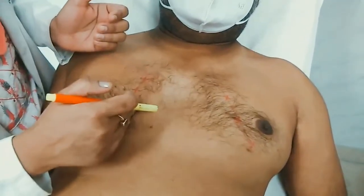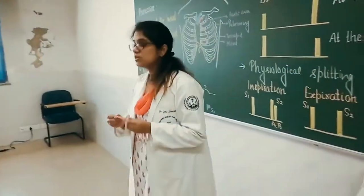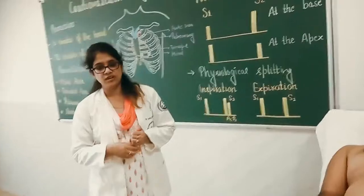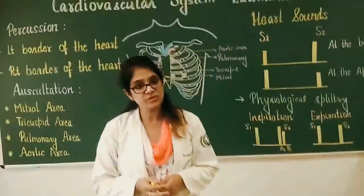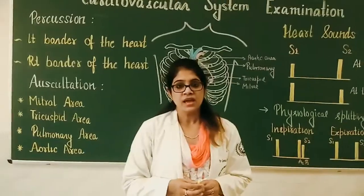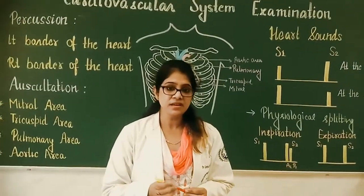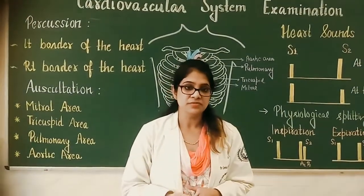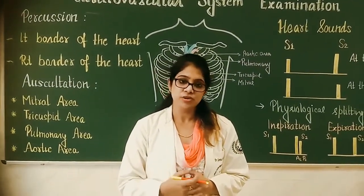The right border of the heart corresponds to the right border of the sternum. You must also know the causes of deviation of the borders of the heart. The left border may be deviated in left ventricular hypertrophy, and the right border can be deviated in pericardial effusion and aortic aneurysm.